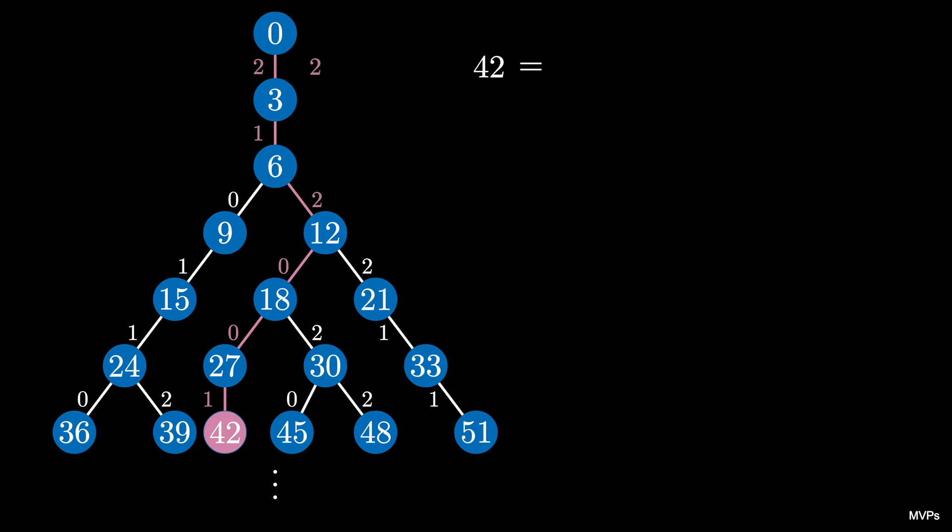If we read off the edge label starting at 0 as 2, 1, 2, 0, 0, 1, and then because it's a multiple of 3, add a final digit of 0, it turns out that we have found the base 3 halves representation of the number 42.